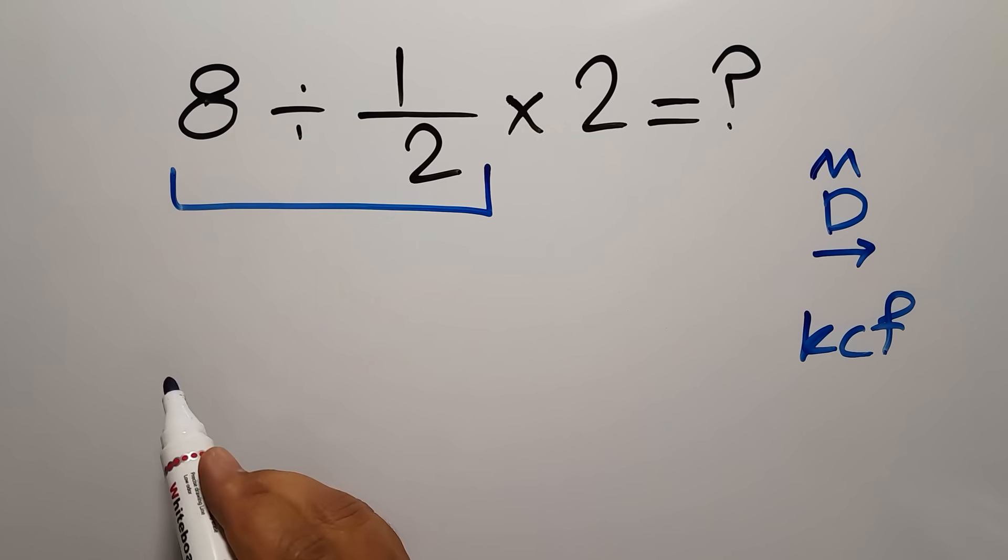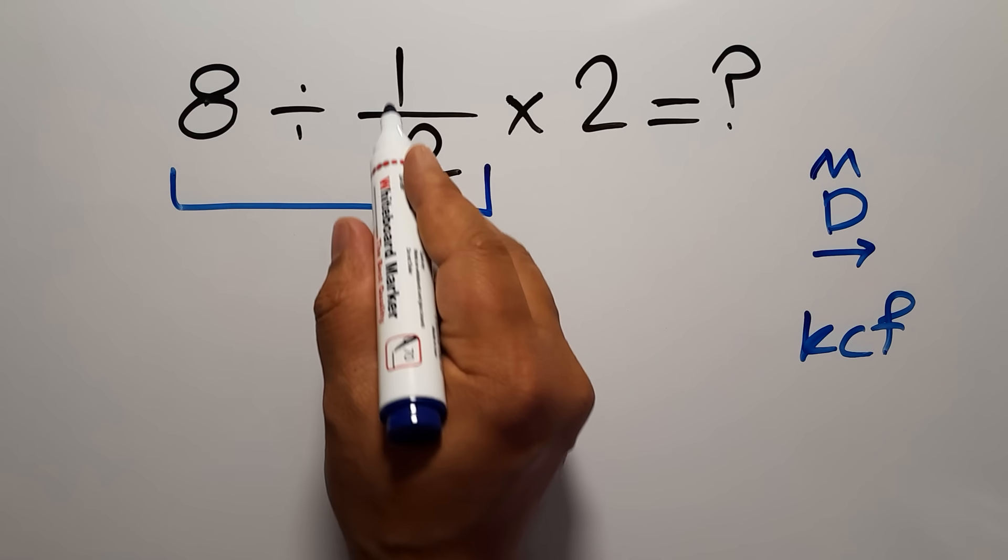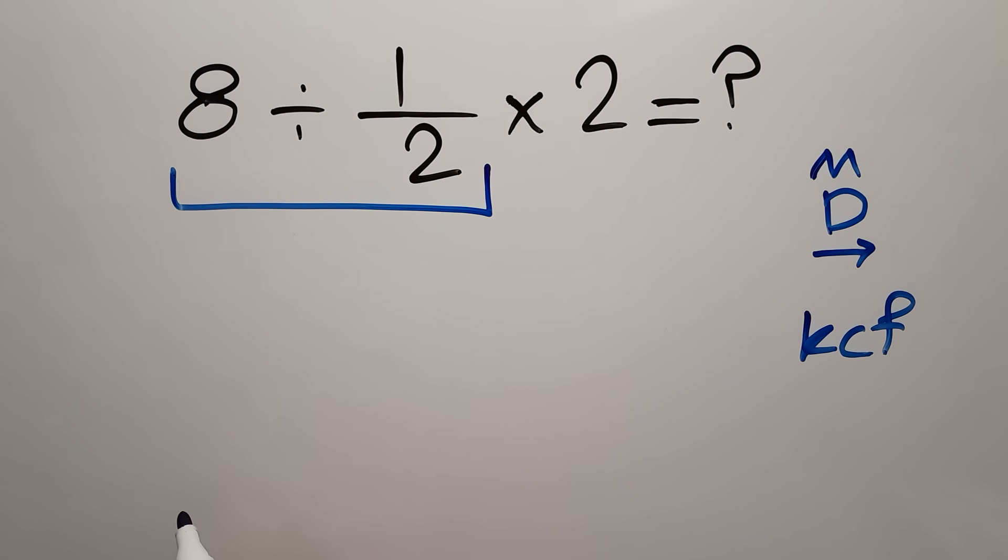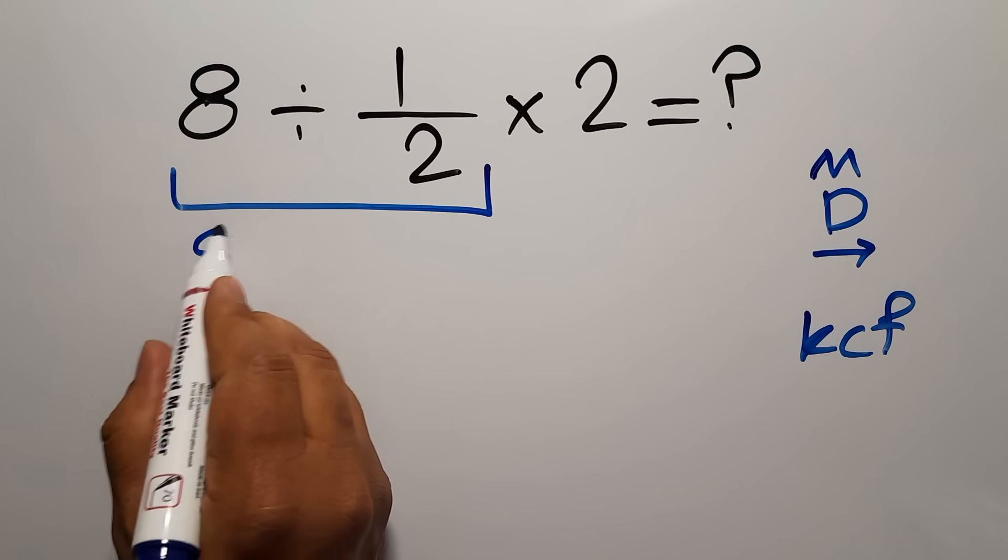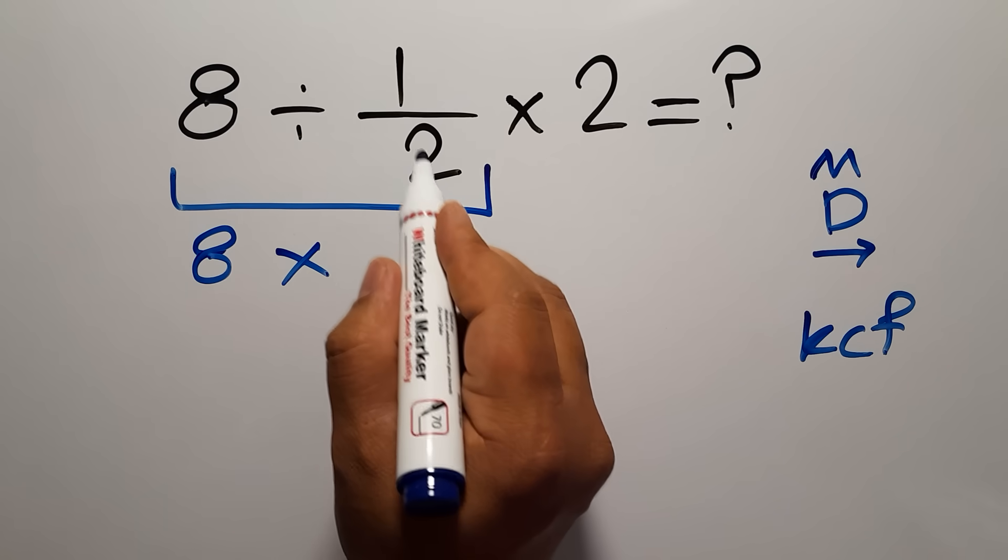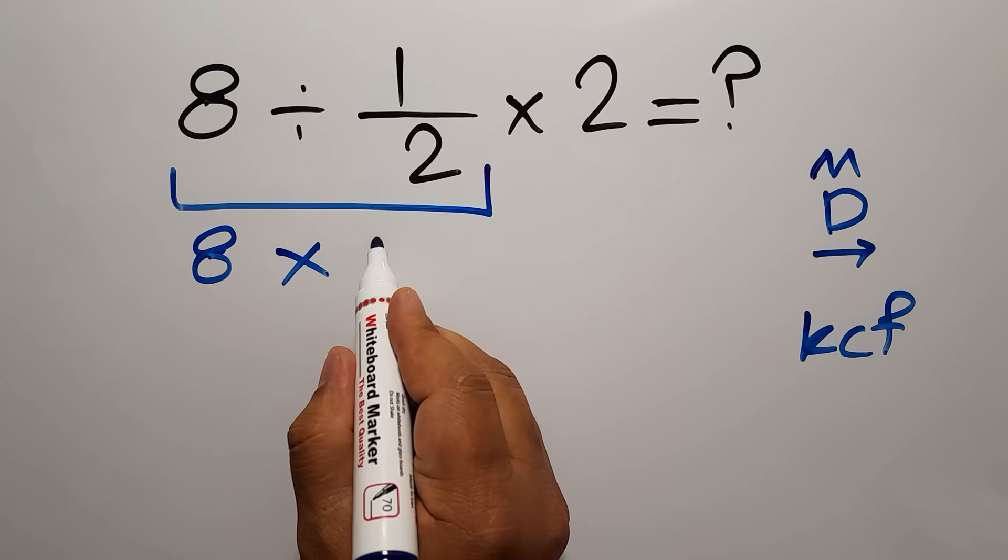According to the KCF rule: K stands for keep, C stands for change, and F stands for flip. Keep the first fraction, change division to multiplication, and flip the second fraction.